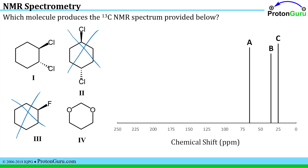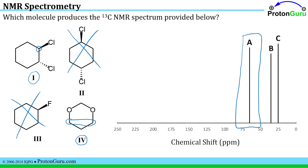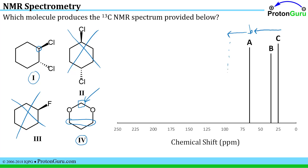Now we need to use our knowledge of chemical shifts to figure out which of these is correct. We know that if we put an electronegative atom onto a carbon atom, it moves it into the range of somewhere between 40 and 100 ppm. Compound one has chlorine attached to a carbon, but so does compound four. Compound four, though, should have a signal for the carbon attached to oxygen, and this carbon attached to two oxygens should be pushed even further downfield. We only see one signal in that region, and we don't see a signal pushed further out as expected for a carbon attached to two electronegative atoms. Those are both pieces of evidence against compound four, so compound one is the most likely to produce this carbon-13 NMR spectrum.